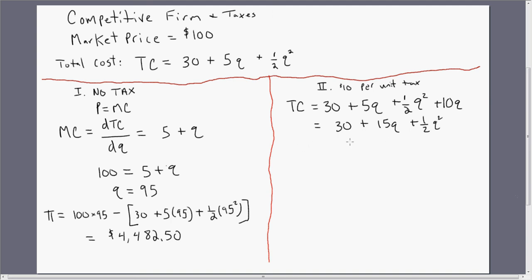Now as before, we're going to maximize profits where price equals marginal cost. It'll just be the case that our marginal cost is slightly different because we've got this $10 per unit tax. So getting marginal cost. Once again, we take the derivative of the total cost equation. So the derivative of 30 plus 15 times Q plus 1 half Q squared will just equal 15 plus Q.